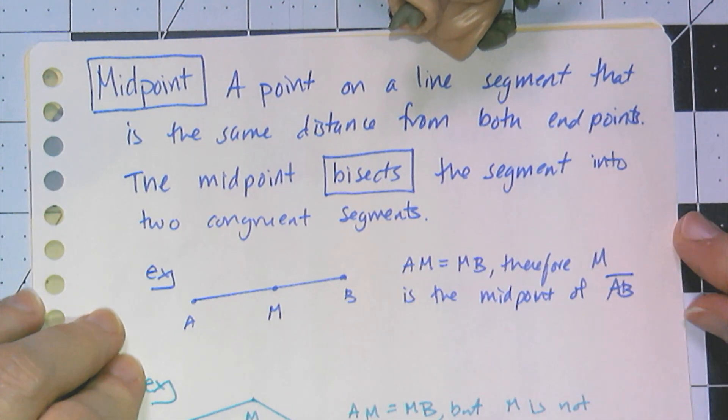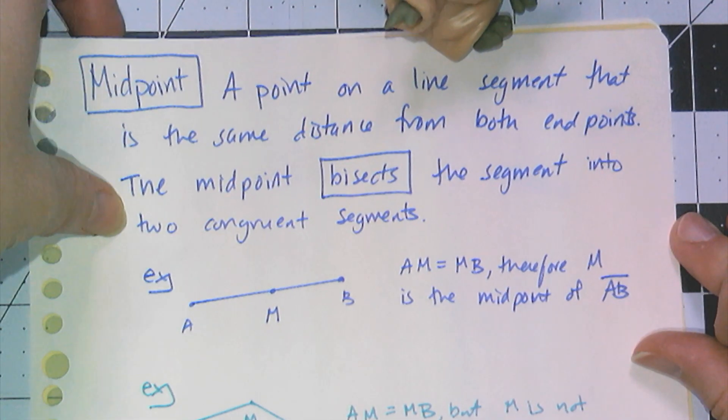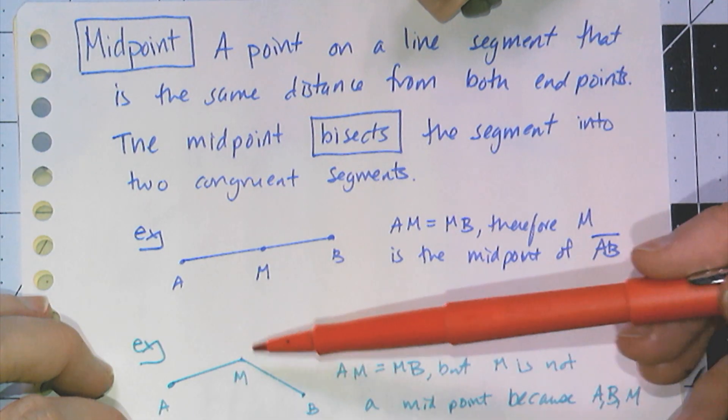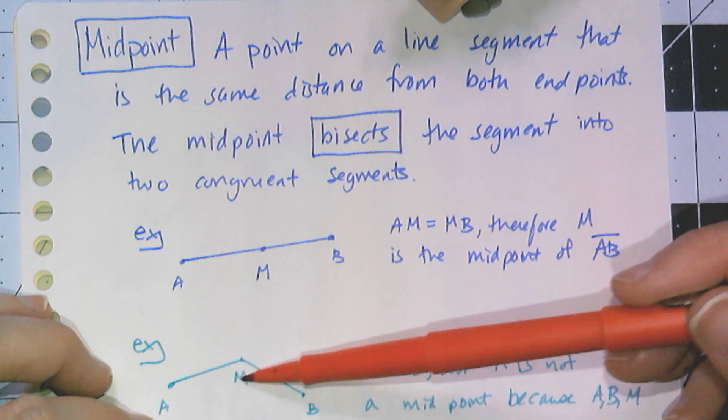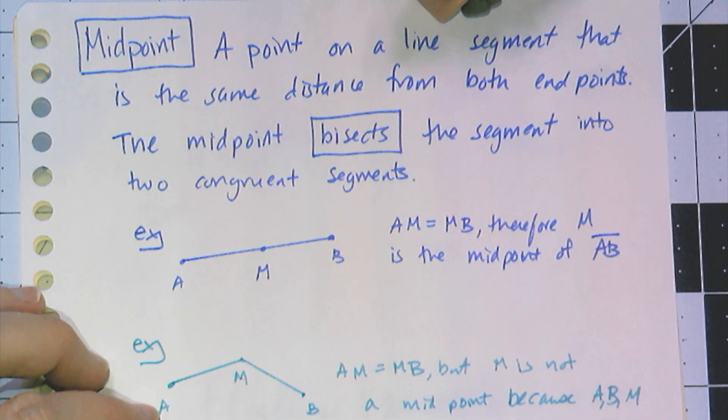I can get tricky on you and set up a situation where I don't necessarily say anything about them being on the same line. I can say AM equals MB, and when I draw it out it could actually be this. In this case, M is not the midpoint because these three points are not collinear.